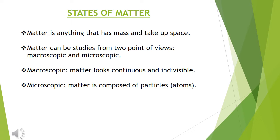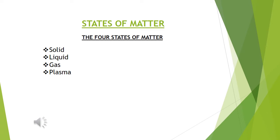According to the microscopic point of view, matter is composed of particles and atoms. As we know, atoms combine together to form molecules, and these molecules combine together to form a compound, then a larger element, and then a larger substance. As you all know, there are three states of matter, but presently there are actually four states of matter. The fourth state is not discussed much because there is not much information regarding it, so we consider only three states of matter.